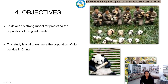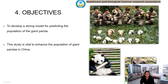Fourth, objective. The major aim is to develop a strong model for predicting the population of the Giant Panda and save them from future trouble. This model should predict panda population based on given information and parameters like annual rainfall, bamboo population, habitat loss, deforestation, and human influence. This study is vital to enhance the population of Giant Pandas in China.